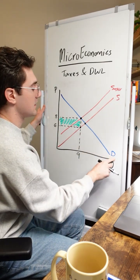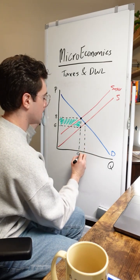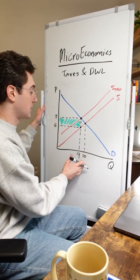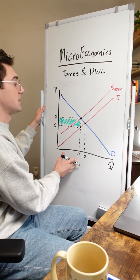Look at the original supply and demand curves. Draw a line down. I'm going to say this is 10 units right here. This market used to operate at 10 units, but the tax restricted market output to nine.